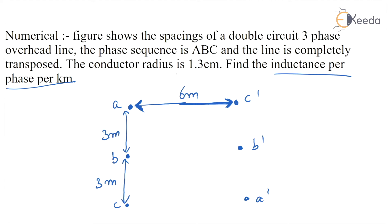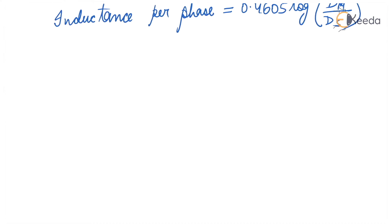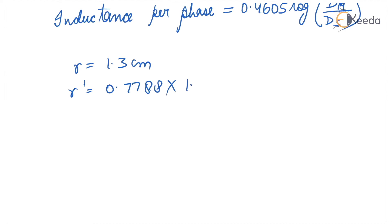Conductor radius is 1.3 cm. So r' is equal to 0.7788 into 1.3, which equals 1.01 cm.